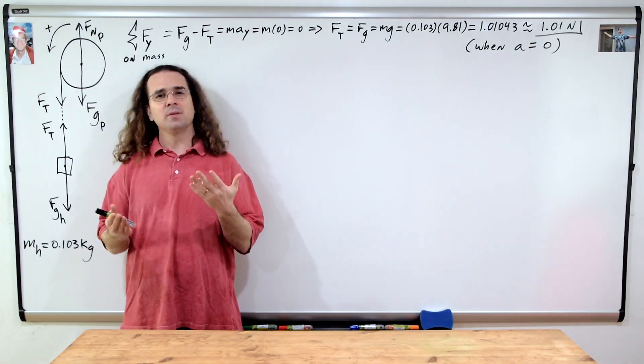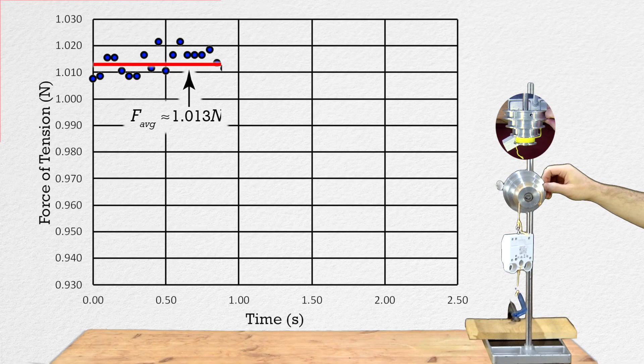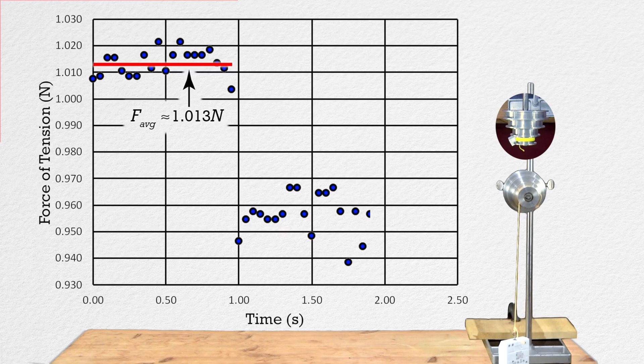Thanks, Bobby. And notice that, before I let go of the pulley, the average measured force of tension does work out to be 1.01 newtons with three significant digits.